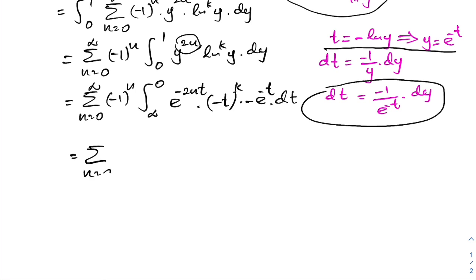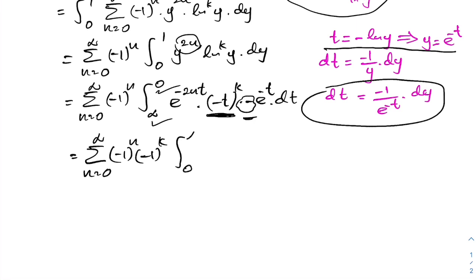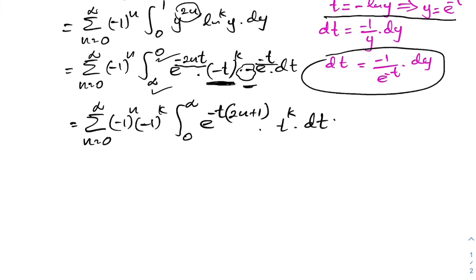After simplification we have the sum from n = 0 to infinity of (−1)^n times (−t)^k, so we can factor out (−1)^k. The integral runs from 0 to infinity of e^(−(2n+1)t) times t^k dt, where we combine the exponential factors as e^(−(2n+1)t).